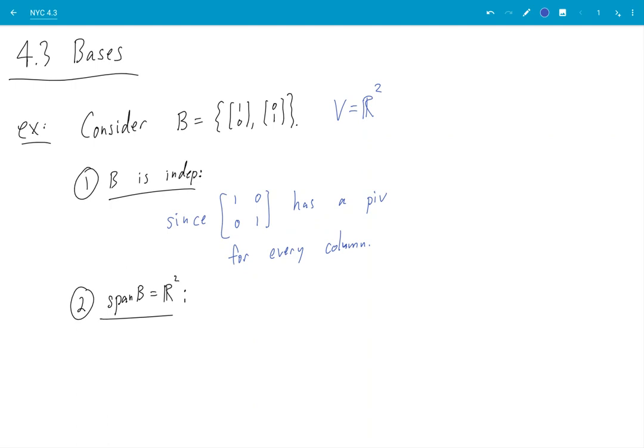And span of B is equal to R² since the same matrix has a pivot for every row. So this was discussed in 1.4, and this was discussed in 1.7.